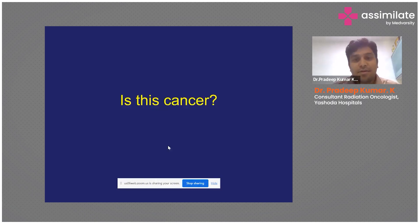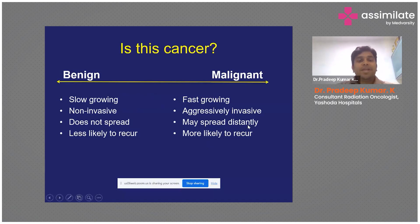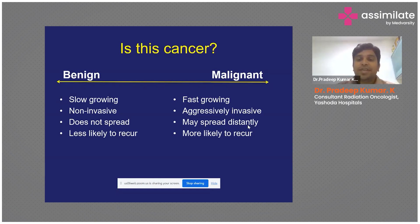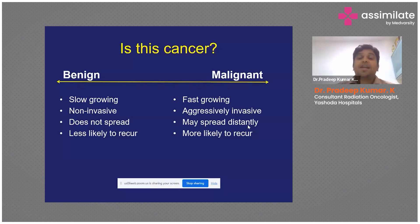A tumor is distinguished as benign or malignant by a few key characteristics. Benign tumors are slow-growing, non-invasive, don't spread, and are less likely to recur after removal. Malignant tumors are fast-growing, aggressively invasive, may spread to distant parts of the body if left untreated, and even after treatment there is a chance they may recur.